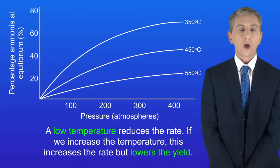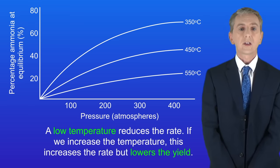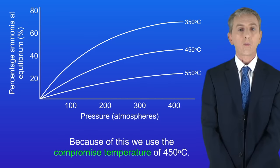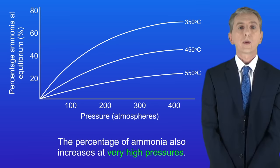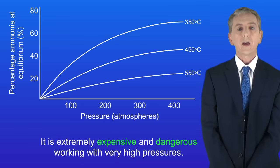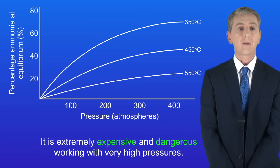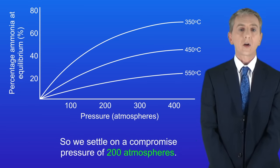As you can see, the percentage of ammonia is highest at a relatively low temperature. However, a low temperature reduces the rate. Increasing the temperature raises the rate but lowers the yield, and high temperatures also require more energy. So because of this we use the compromised temperature of 450 degrees Celsius. The percentage of ammonia also increases at very high pressures, but it's extremely expensive and dangerous to work with very high pressures, so we settle on a compromised pressure of 200 atmospheres.